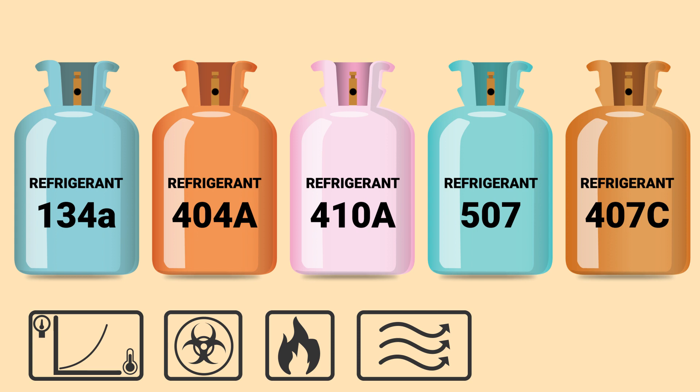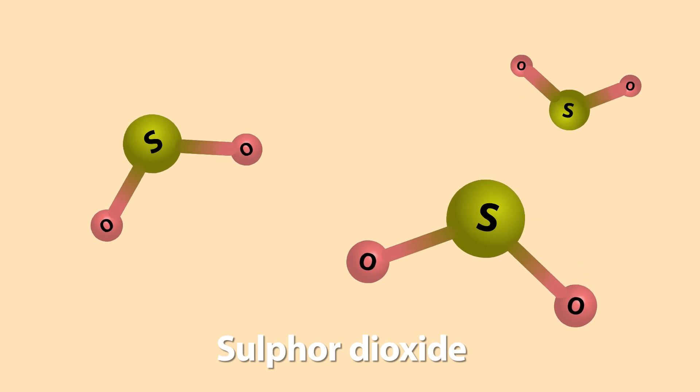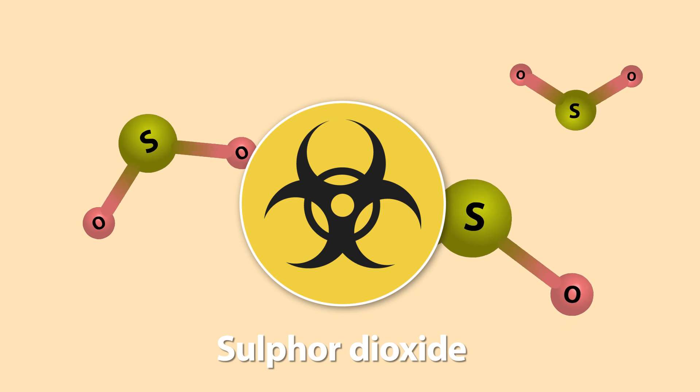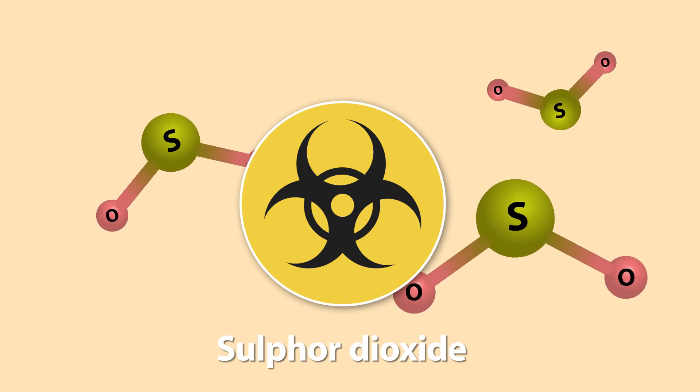Now refrigerants have been around for a long time, but that doesn't mean the same refrigerants have been around forever. In fact, some of the early refrigerants were pretty nasty stuff — think methyl chloride or sulfur dioxide. Not only do they smell really bad, but they're actually quite toxic. So if you had a refrigerator in your house and it sprung a leak, those toxins could be very irritating to the respiratory system, and high concentrations are quite deadly.